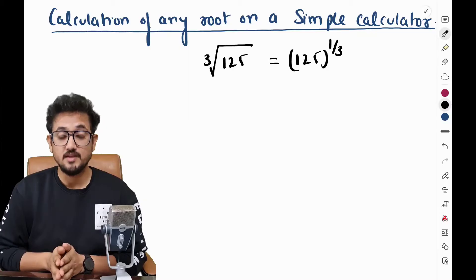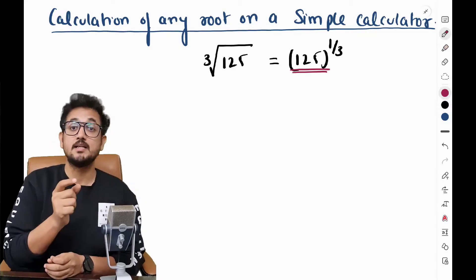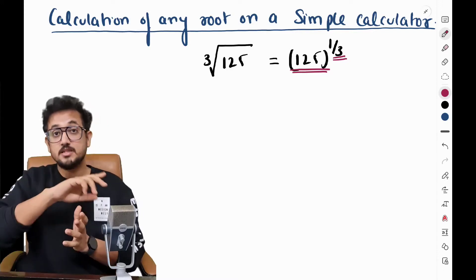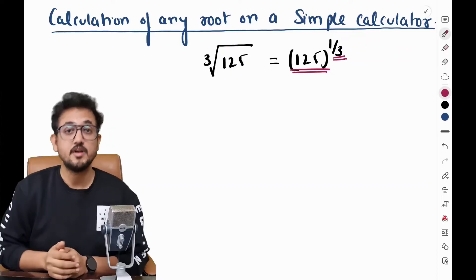You have to understand one thing. There are two numbers involved. One is 125 and the other is one by three. So just take these raised to the power as a different number and 125, any x as a different number.